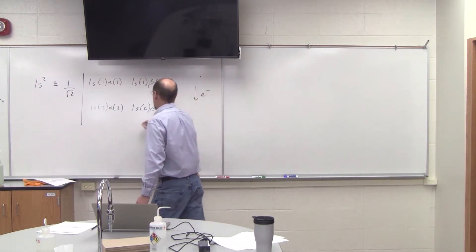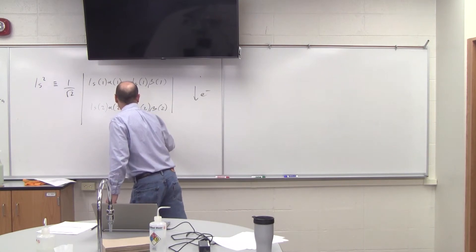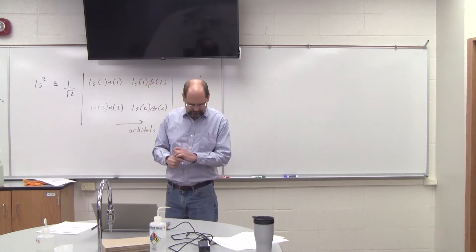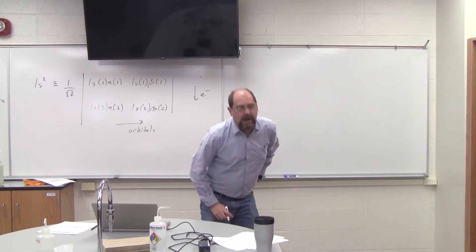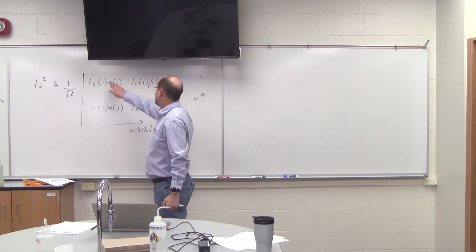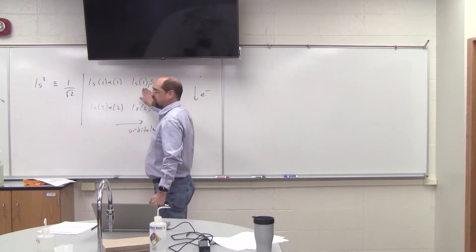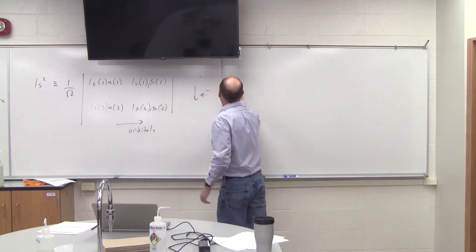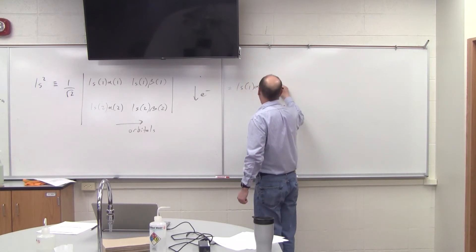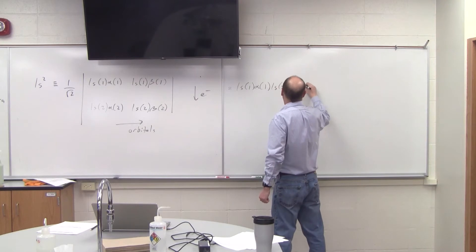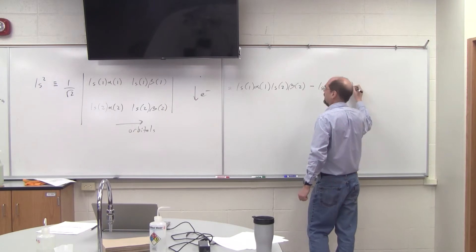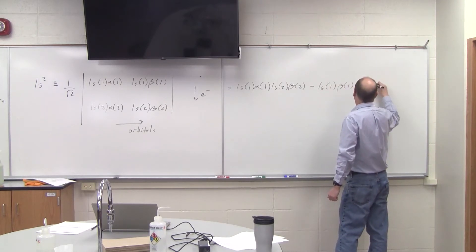Electrons and orbitals. What does this give me? The process for solving a 2x2 determinant is that a 2x2 determinant is this term times this term minus this term times this term. So this is equal to 1s(1) alpha(1) times 1s(2) beta(2), minus 1s(1) beta(1) times 1s(2) beta(2).